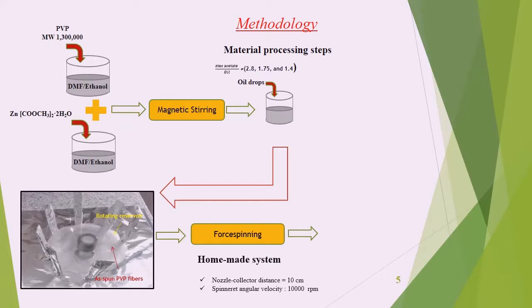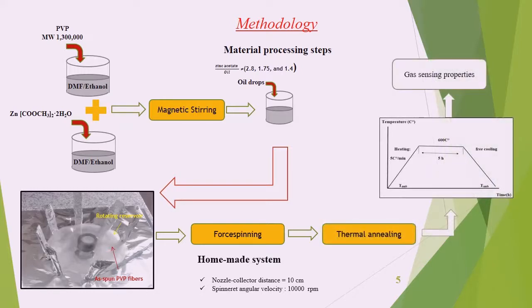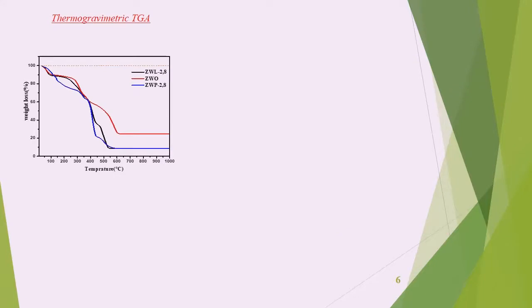The main parameters of the centrifugal spinning process, such as solution concentration, rotation speed, and distance to the collector, were optimized to achieve optimum conditions for fabricating nanotubes. The PVP composite nanotubes were calcined at 600 degrees Celsius for five hours. The produced fibers were deposited on microsensors for studying their sensing properties.